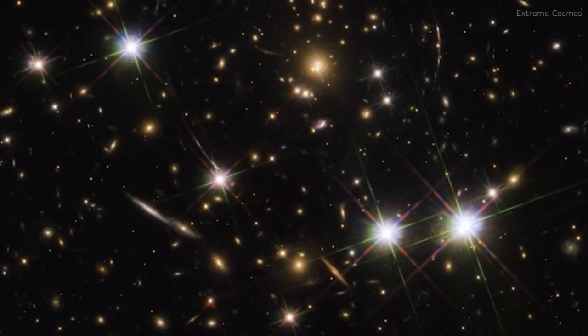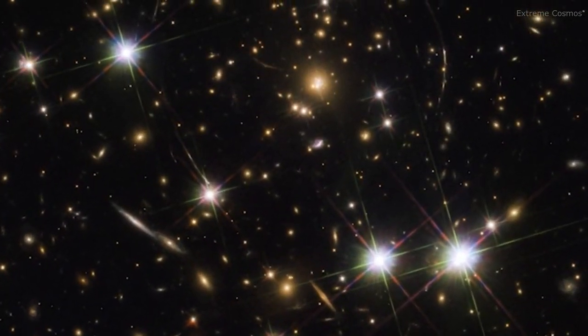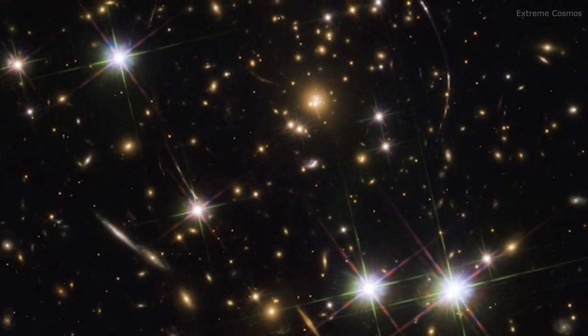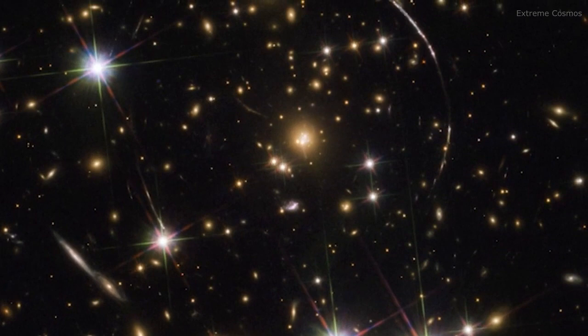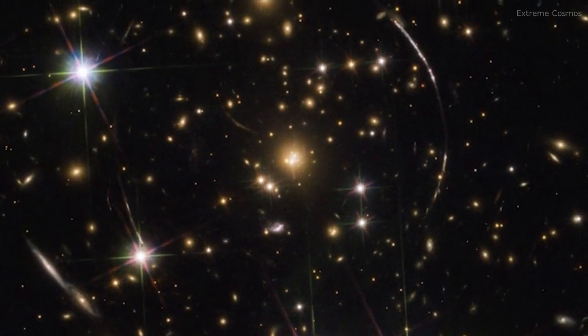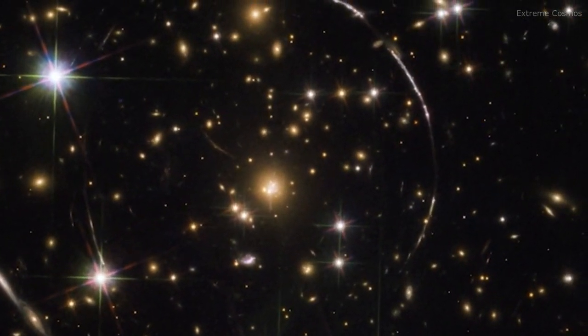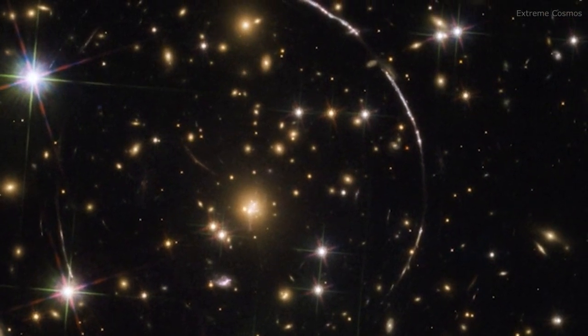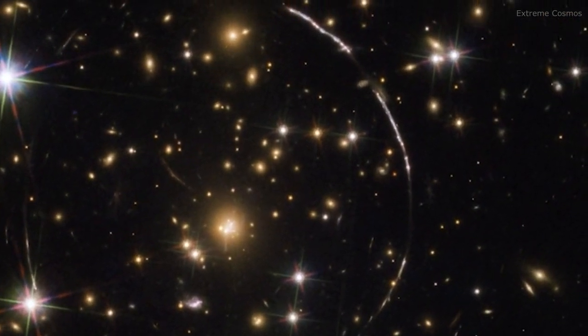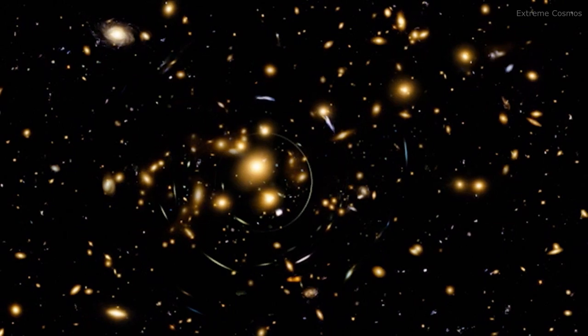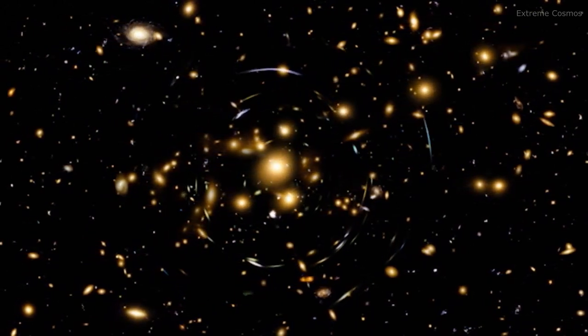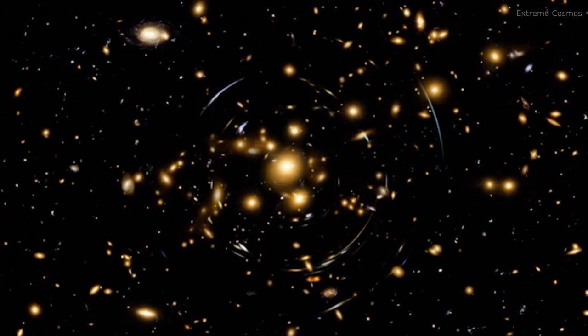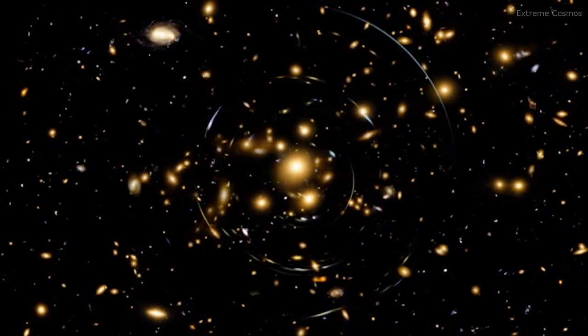The Hubble Frontier Fields Observing Campaign drew upon the power of massive clusters of galaxies to unleash the full potential of the Hubble Space Telescope. Hubble's sensitivity and high resolution allow it to see faint and distant gravitational lenses that are harder to detect with ground-based telescopes.